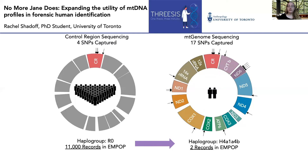If we take a look at this figure, we see that the left represents the region captured with control region sequencing, while the right represents whole genome sequencing. If we use the RO haplogroup as an example, we can see that there is poor differentiation in the control region alone. Only four SNPs are required to belong to this haplogroup, so anyone with these four SNPs would fall into haplogroup RO, making it difficult to distinguish individuals within this group.